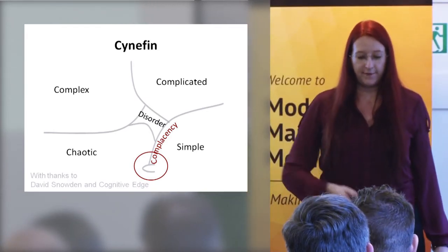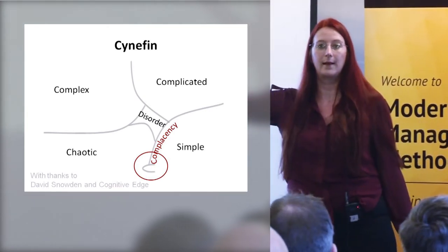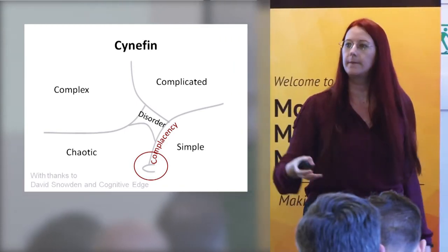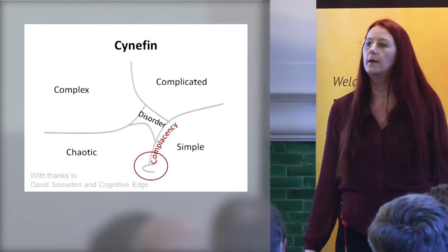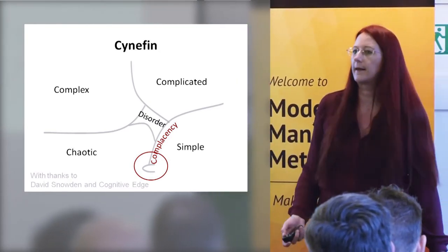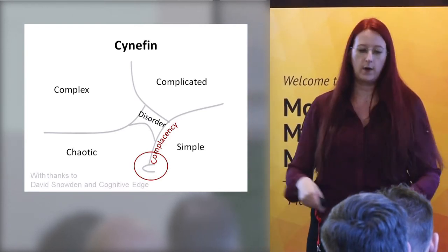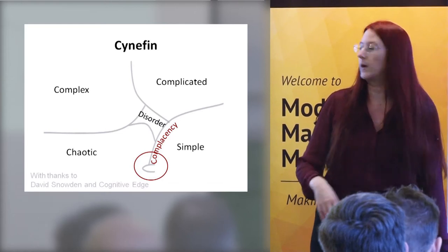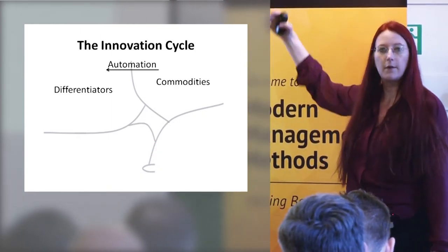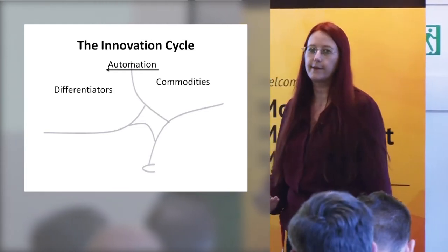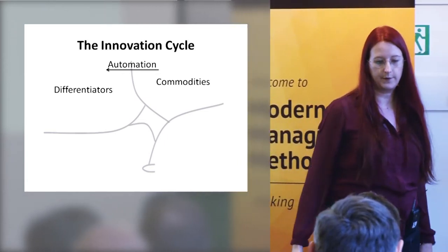We know that spoilers move things from differentiators to commodities, and we also have automation moving back the other way — when we automate, it becomes a different complex problem again. I'm using these words in the specific way that complexity thinkers do. Even complicated and complex are synonyms in plain English, but they're used differently here. If you ever get stuck remembering which is which, complicated is the one with more parts. You get this cycle of things being commoditised as they become better understood, and then as we try to make them repeatable and create tools, it goes back the other way.